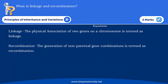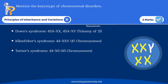Now let's discuss important questions from the chapter Principles of Inheritance and Variation. For two marks, definition-based questions like: what is linkage and recombination? Also: mention the karyotype of chromosomal disorders — the three chromosomal disorders given in the textbook are Down syndrome, Klinefelter syndrome, and Turner syndrome. Write the particular karyotype for each.